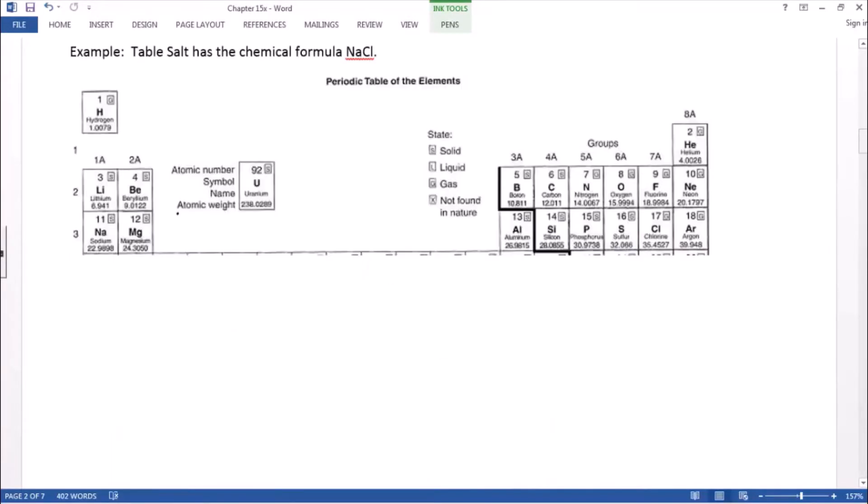Let's do an example. Table salt has a chemical formula NaCl. So that's an ionic compound, because we take a metal atom, sodium is on the left, and we take a nonmetal chlorine on the right, and they stick together through an ionic bond.